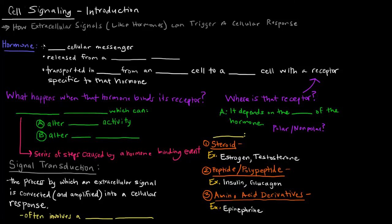In this video, I want to introduce the idea of cell signaling. What is cell signaling? It's basically the idea behind how extracellular signals, which are signals that come from outside the cell—things like hormones—can trigger a cellular response. Something comes from outside the cell, comes over to a cell, and causes that cell to respond in a certain way.